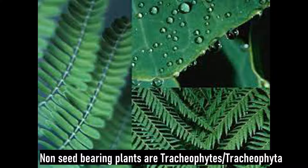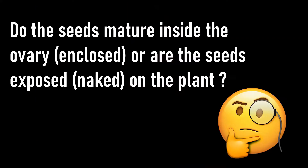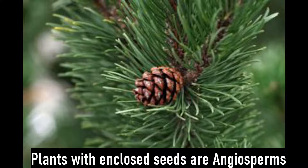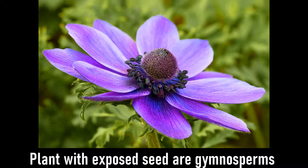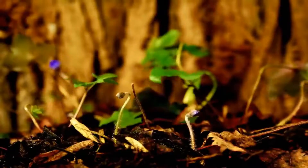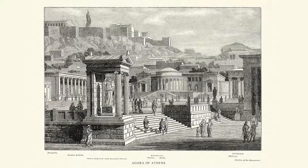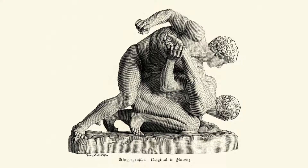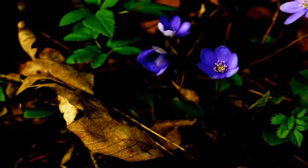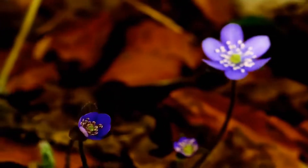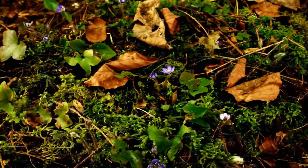With spermatophytes, you ask a third question: do the seeds mature inside the ovaries — enclosed — or are the seeds exposed and naked on the plant? Plants with enclosed seeds are angiosperms, and those that produce exposed or naked seeds are called gymnosperms. The word gymnosperms comes from the Greek word gymno, relating to wrestling naked over 2,000 years ago — it now refers to plants that reproduce with naked, exposed seeds.